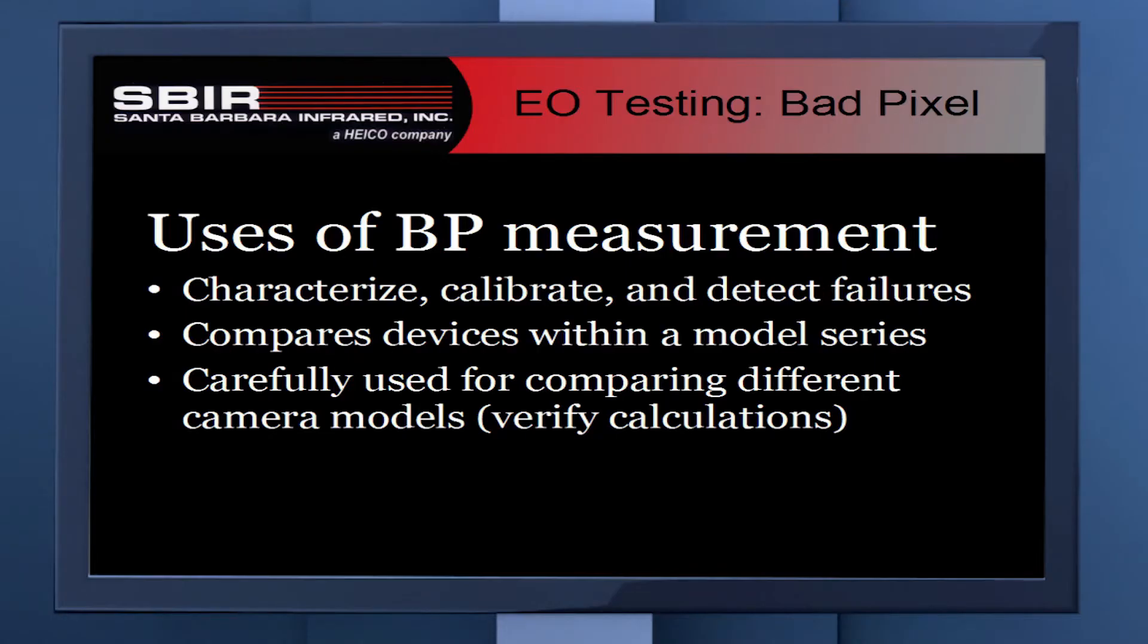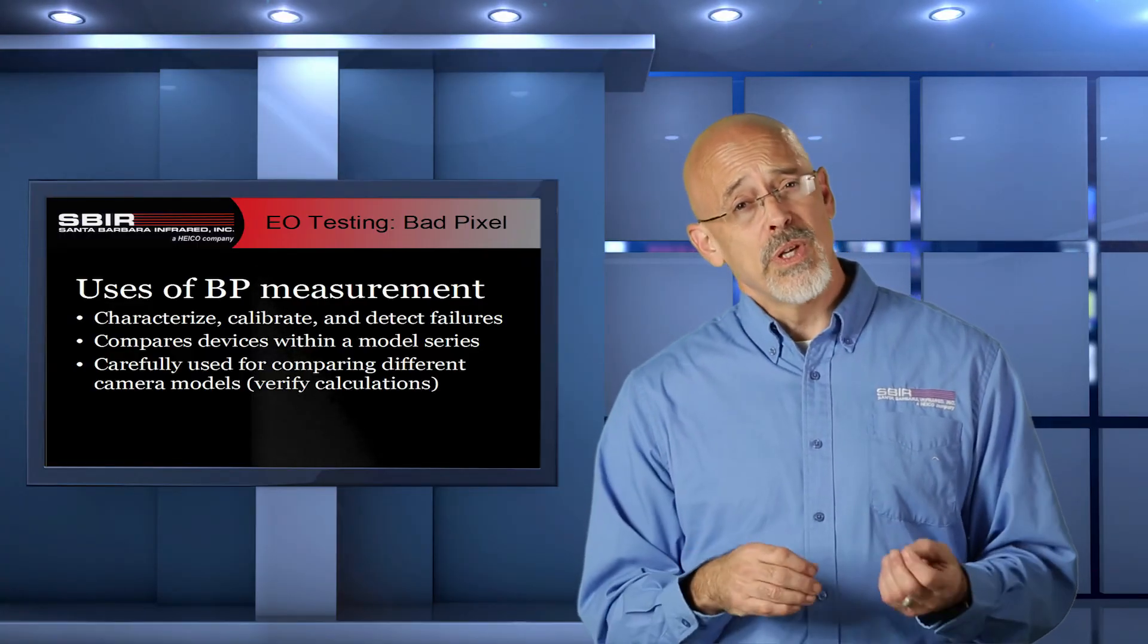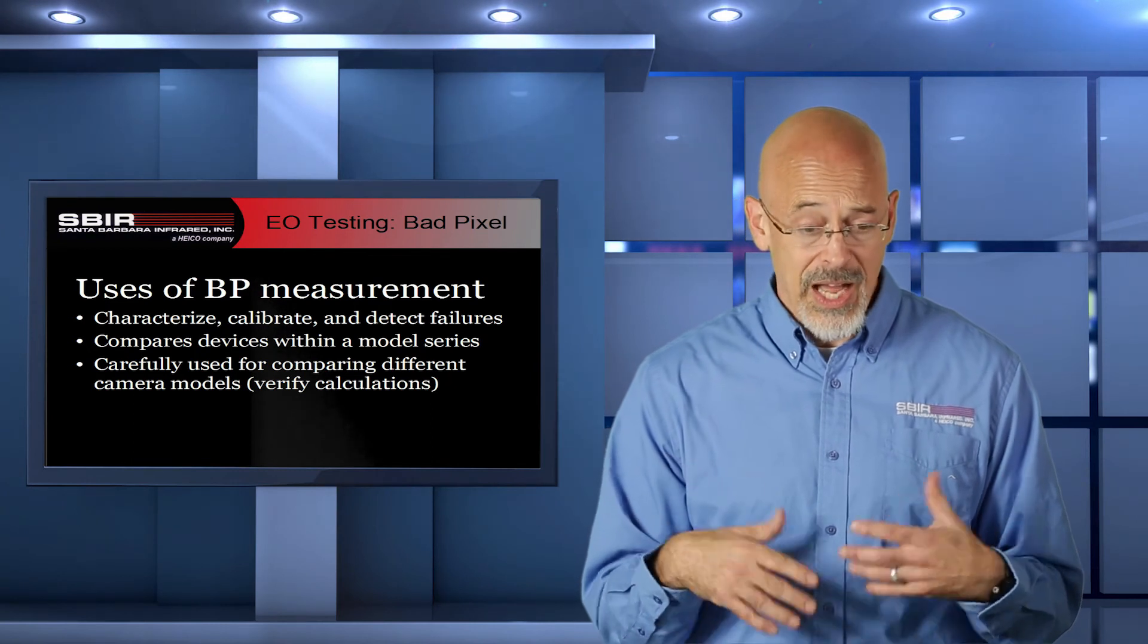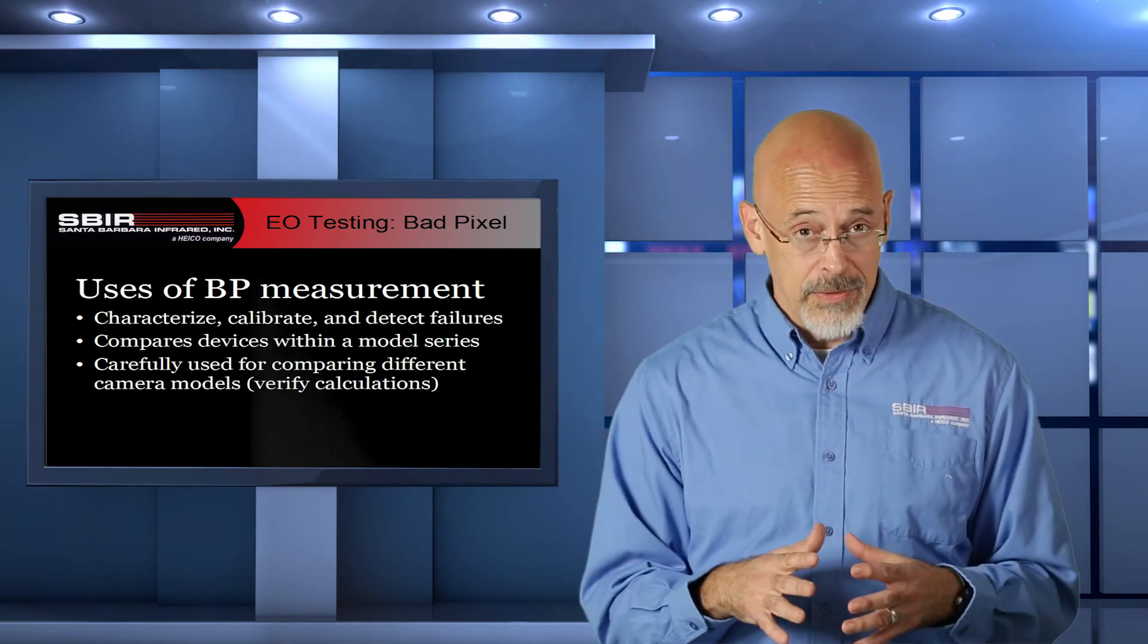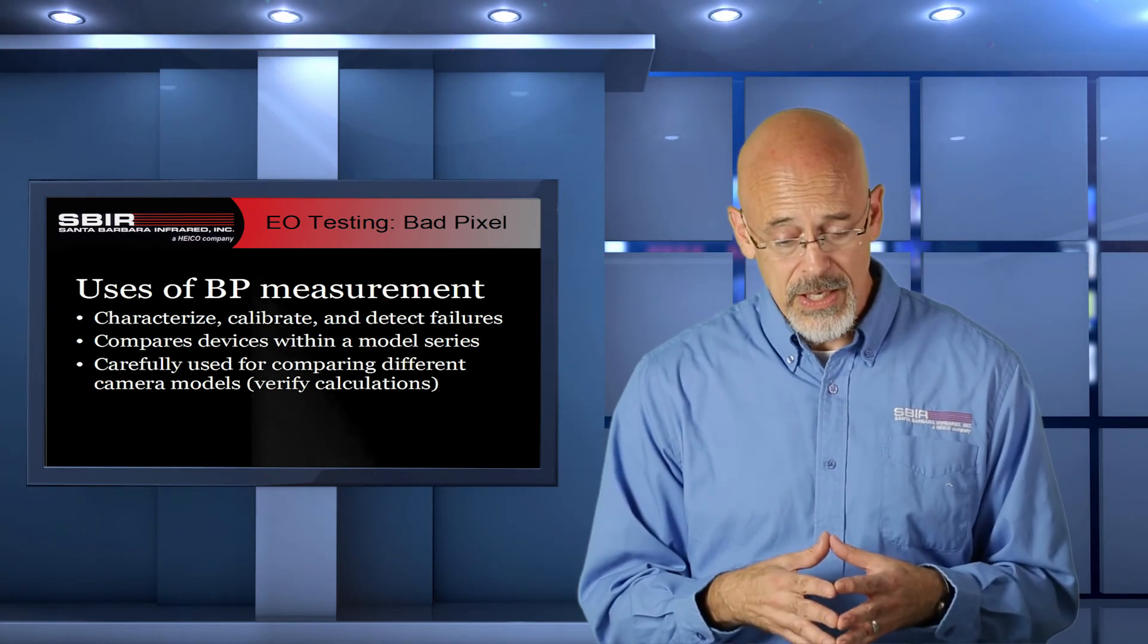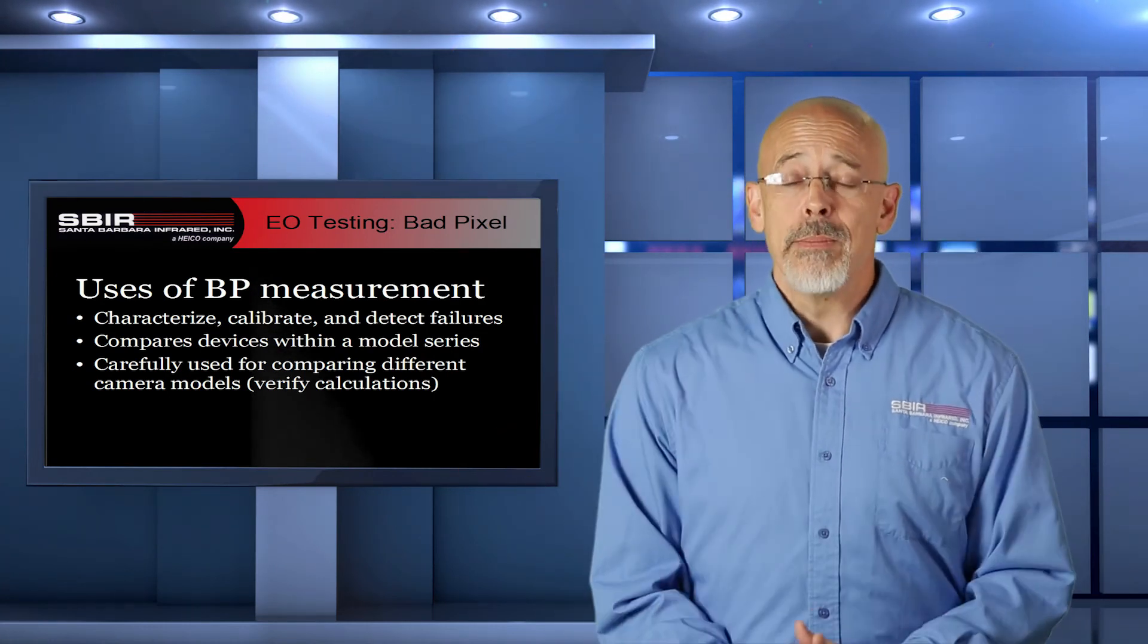So, uses of this. As I've mentioned, you use it to characterize a camera, determine whether it passes your criteria. You can do some calibration because you can correct for some bad images. You're also going to be using it to compare different cameras to determine which one is a better quality, and to a limited degree, you can compare cameras from different model runs. You're really just determining the quality of the camera, whether it's a high-end camera where you're not allowing any defects, or whether it's an inexpensive camera where you're expecting certain defects. And that's how Gain Offset Bad Pixel is applied.